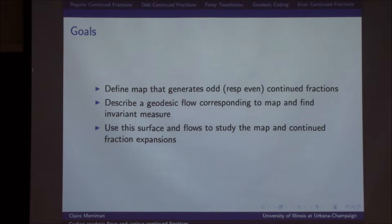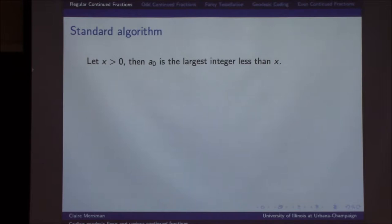The goal is to define some map that generates these continued fractions, and to describe a geodesic flow corresponding to the map and use this to find an invariant measure. We're also going to use the surface and the flows to study the maps of the continued fraction expansions. But before I get into what the odd and even continued fractions are, I want to talk a little bit about our standard continued fraction algorithm.